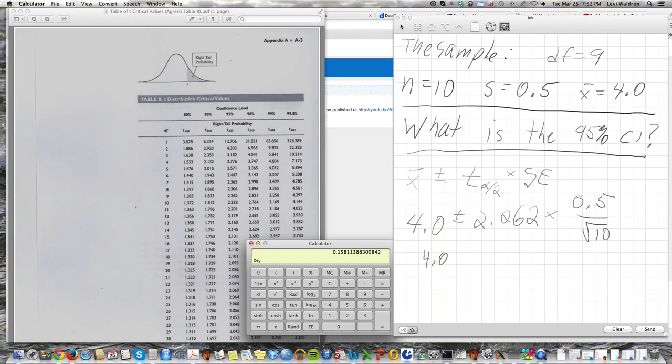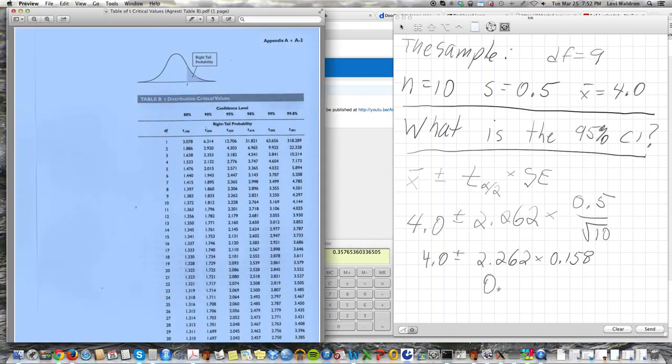So 4.0 plus or minus 2.262 times 0.158. Remember your order of operations, multiplication comes before addition, so we multiply these first. I'm going to multiply this times 2.262, and that's 0.357, so this is 0.358 rounding up.